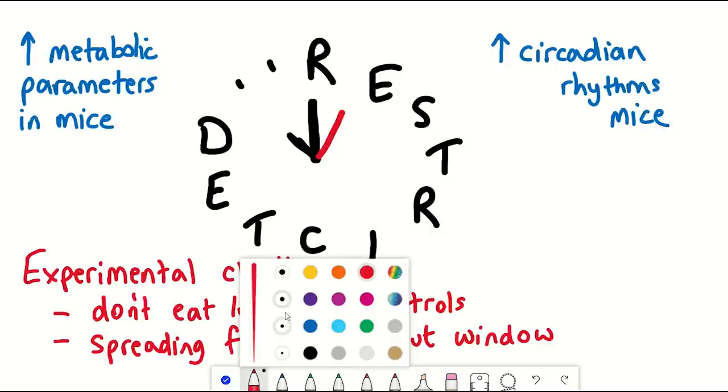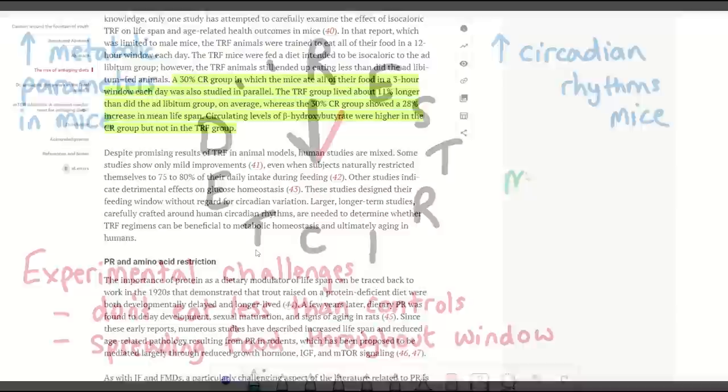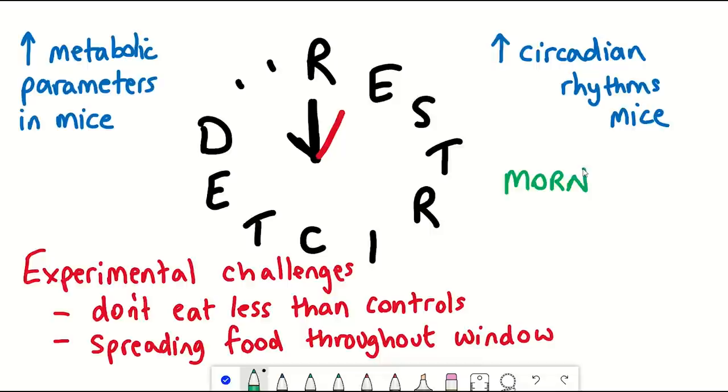As discussed in this review, although there is some promising data from the mouse studies, human data is less clear, partly due to sparsity, and also because it might depend on when the eating window was, for example morning versus evening.